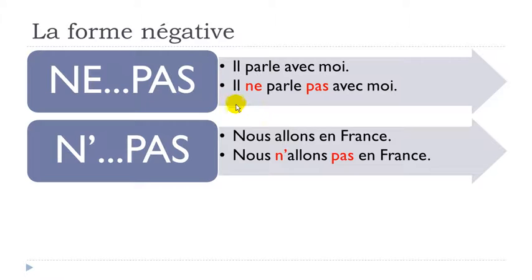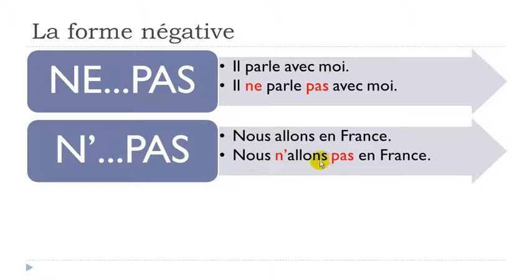Now let's see how it works with 'n'' apostrophe. Take 'nous allons en France' — 'aller' means to go, 'nous allons' means we are going. Since 'allons' starts with the vowel A, you drop the E from 'ne' and write 'n''. So you get: 'nous n'allons pas en France'.